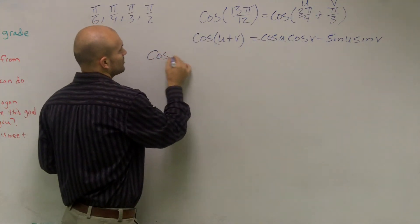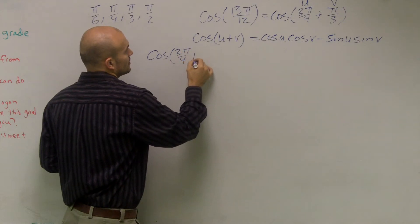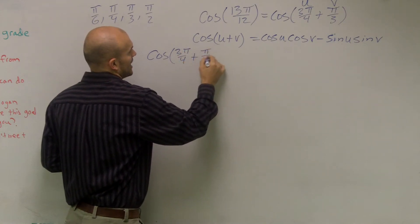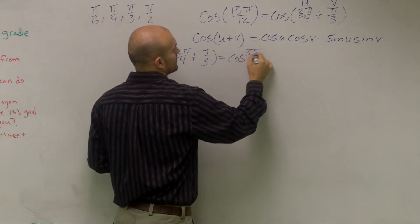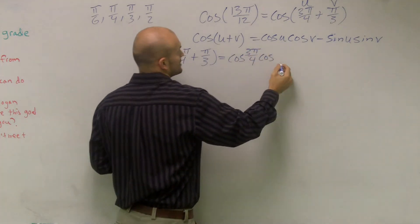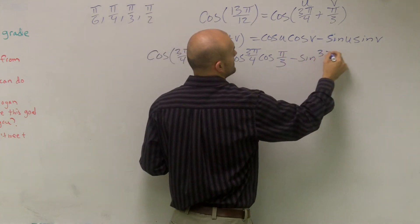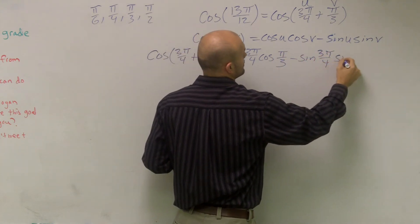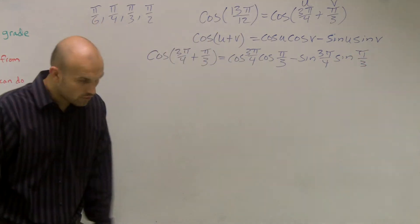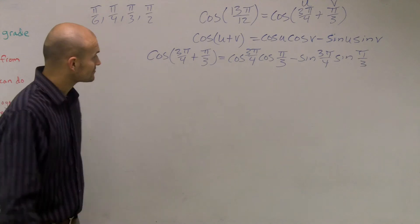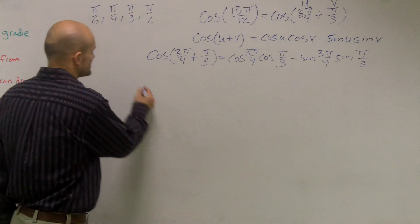Now all I'm simply going to do is plug in those values. So cosine of 3π/4 plus π/3 equals the cosine of 3π/4 times the cosine of π/3 minus the sine of 3π/4 times the sine of π/3. That's a lot to say. Next, what I need to do is find the values of each one of those points.